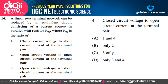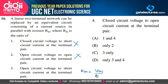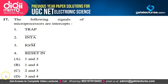A linear two-terminal network can be replaced by an equivalent circuit consisting of a current source in parallel with resistor Rn, where Rn is the ratio of open-circuit voltage to short-circuit current at the terminal pair — that is true. R_Thevenin = Voc / Isc. Only statement 3 is true, so option C is the correct option.